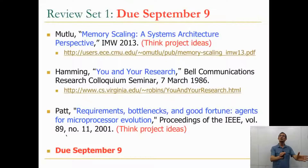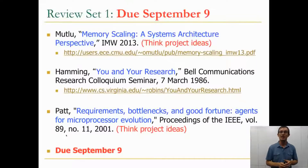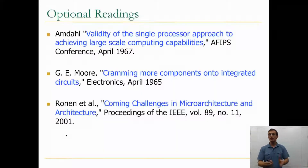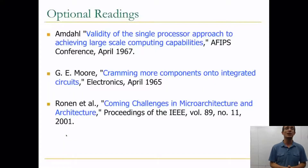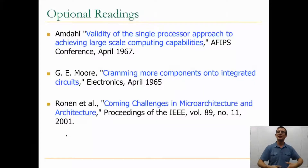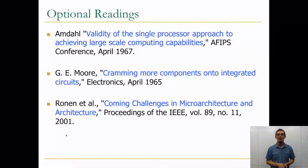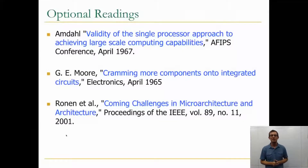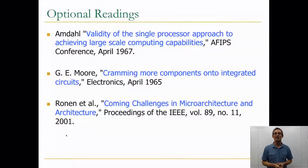All three reviews are due September 9th. It's not as scary as it looks — the memory scaling paper is about five or six pages, the Yale Patt paper is relatively short, and the Hamming paper is a great read. There are also optional readings: one is Amdahl's seminal paper, 'Validity of the Single Processor Approach to Achieving Large-Scale Computing Capabilities.' It's very short, and I strongly encourage you to read it — it's important to go to the original source and evaluate it from the perspective of 1967.